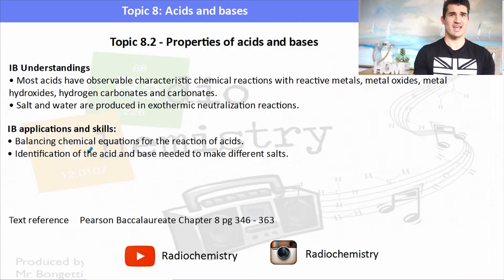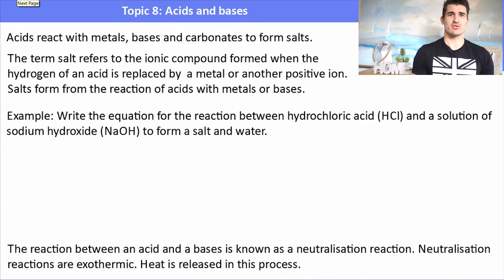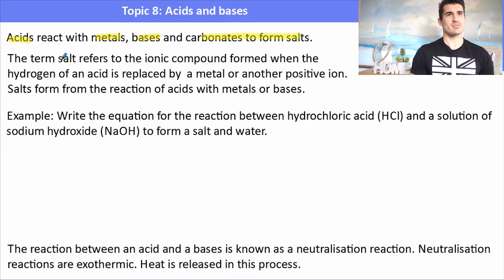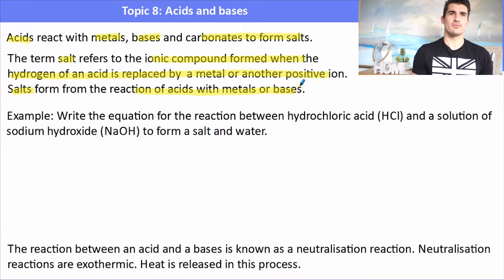Acids react with metals, bases, and carbonates to form what we describe as salts. A salt refers to an ionic compound formed when the hydrogen of an acid is replaced by a metal or another positive ion. Salts form from the reaction of acids and bases with metals or bases.